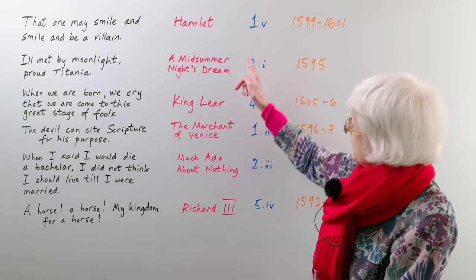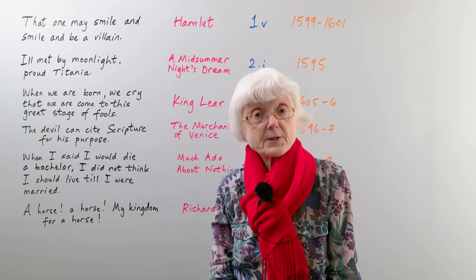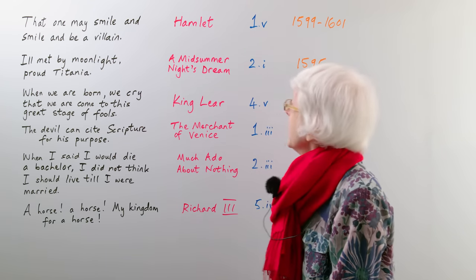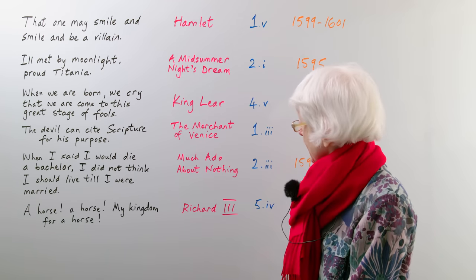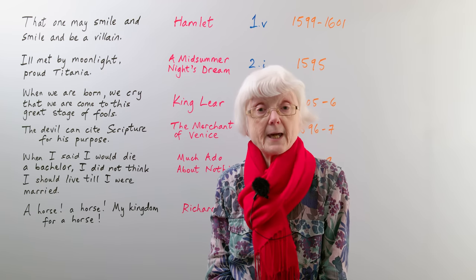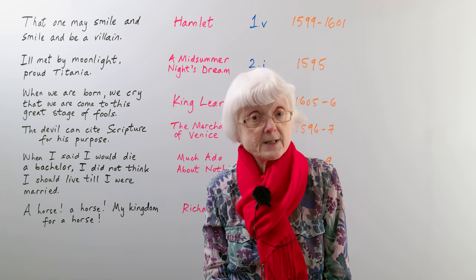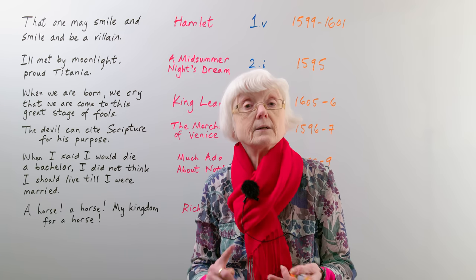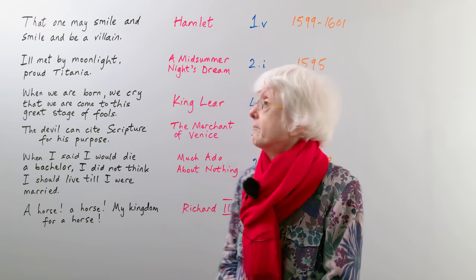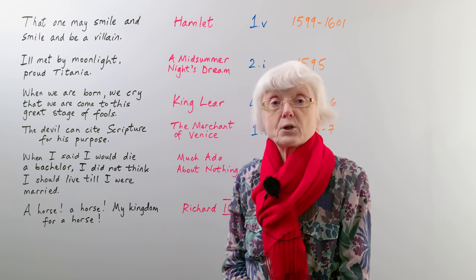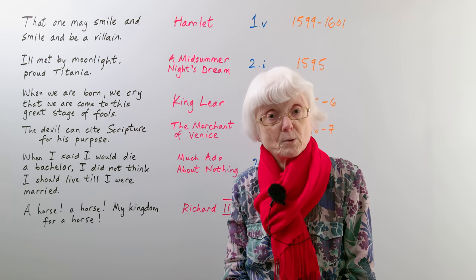We have six examples here from six different plays, and some are tragedies, some are comedies. One is a history play, so Shakespeare's plays divide up into these categories of tragedy, comedy, and history, and other types of play as well. I've also included the dates of when they were first performed.